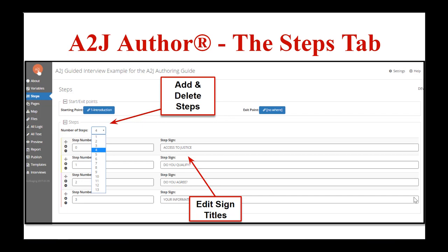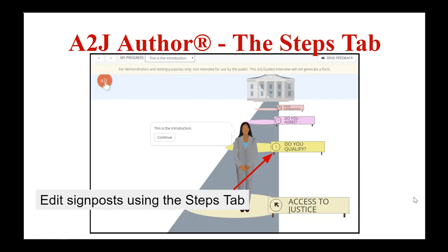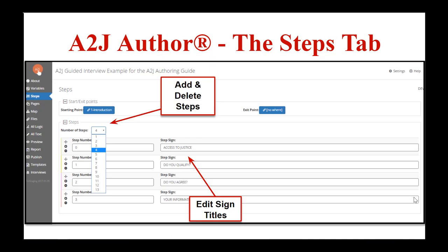Each step can have an unlimited number of questions in your interview. You can click on the name to edit that step name. This tab is also where you can set your interview's starting and exiting point. The starting point by default is the first question of the interview. The exit point is only used when you want to enable save and resume — a feature that allows end users to exit, save their answers, and come back later to complete the interview. You can learn more about save and resume by watching the video on our YouTube channel at youtube.com/AtoJAuthor.